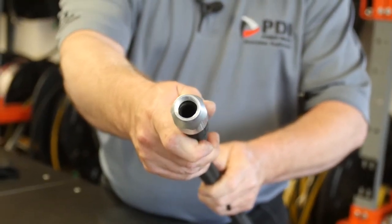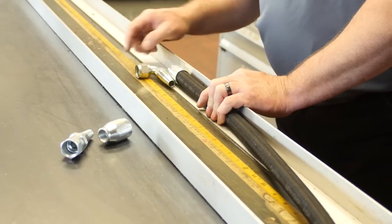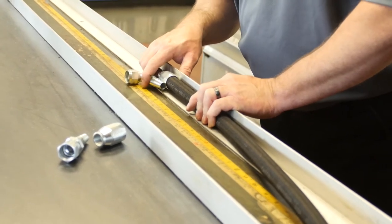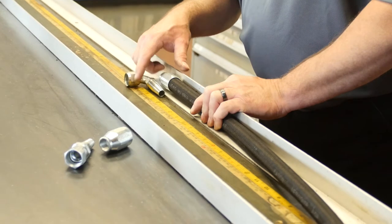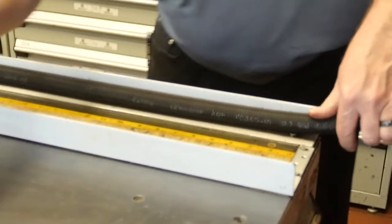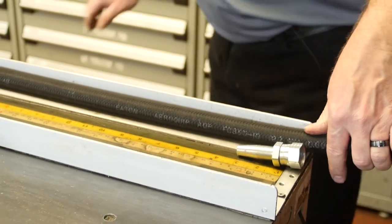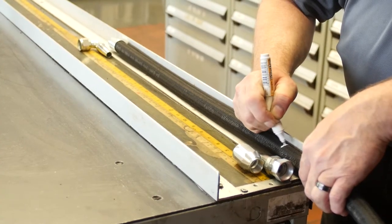We'll come over here and measure the hose. We determined the previous hose was 28 inches. We'll measure to the center of the collar here, again leaving just enough room.